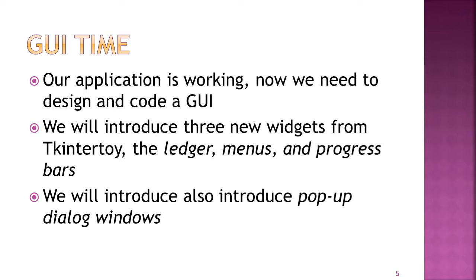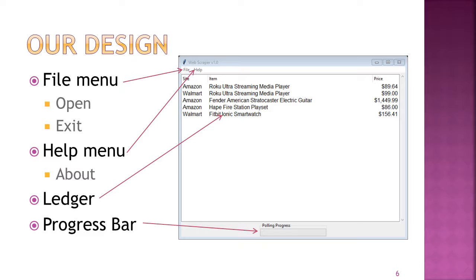Now it's time to design our GUI. We're going to introduce widgets from TKEnterToy: the ledger, menus, and progress bars, and pop-up dialog windows. It looks like a standard Windows-type program. We'll have a file menu with open and exit commands, a help menu with about, a ledger where we see our items, and a little progress bar at the bottom as the program collects information from web pages.